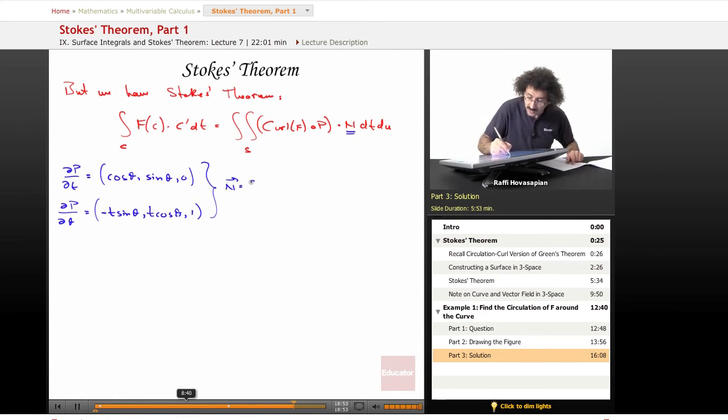n equals ∂P/∂t cross ∂P/∂θ. When I compute that cross product, I end up with (sin θ, -cos θ, t). So that's n.